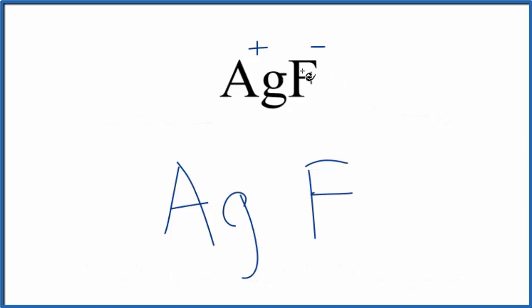So the silver, when it bonds to fluorine, it's lost an electron to the fluorine. The fluorine, it's negative, it gained one.